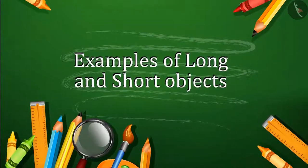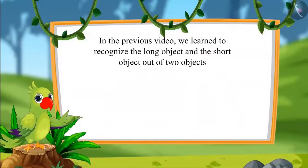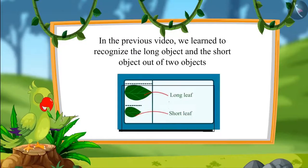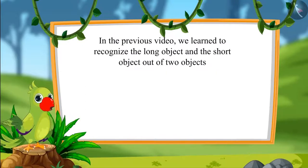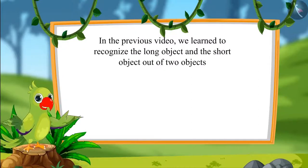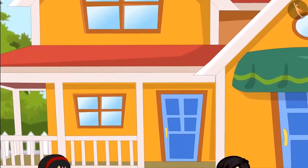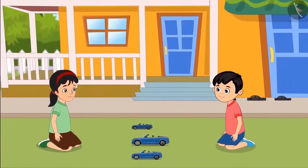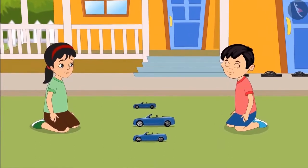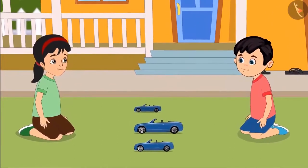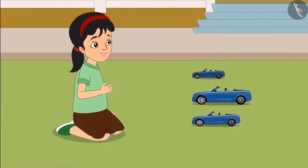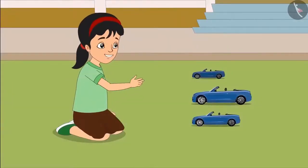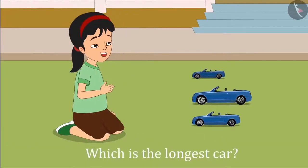Examples of long and short objects. Kids, in the previous video, you learned how to identify the long object and the short object out of two objects. In this video, we will identify the longest object and the shortest object out of three objects. Today is a school holiday for Chotu and Pinky. They are both sitting outside their house and playing with their toy cars.